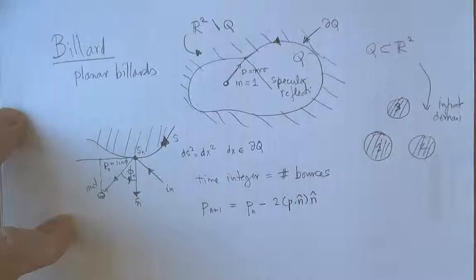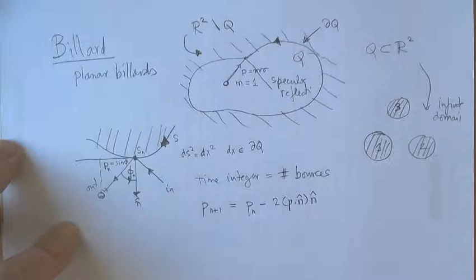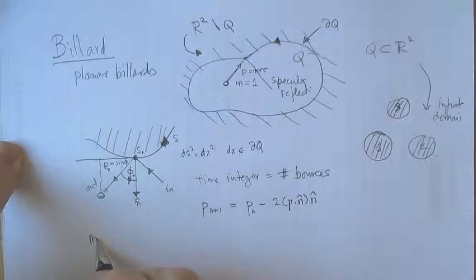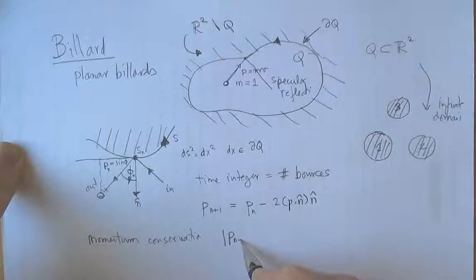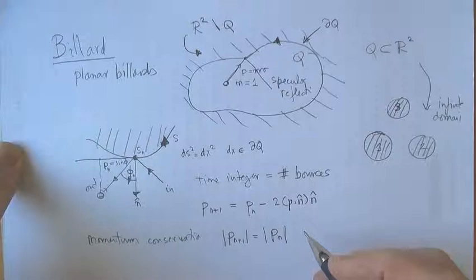And we'll define the parallel momentum to the surface P to be sine phi, sine of the outgoing angle. So if phi is 90 degrees, this is the full momentum. If it's not, it's a projection parallel to the wall.